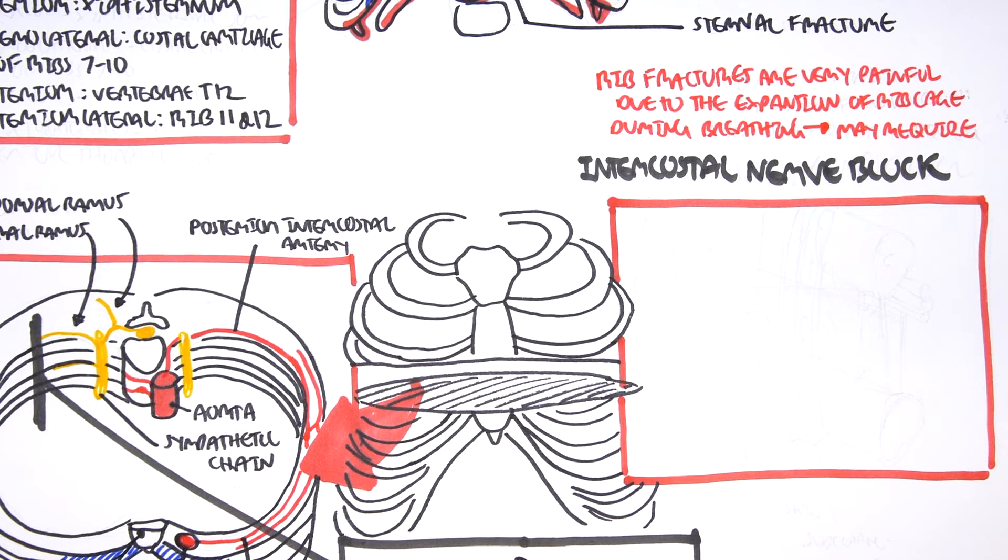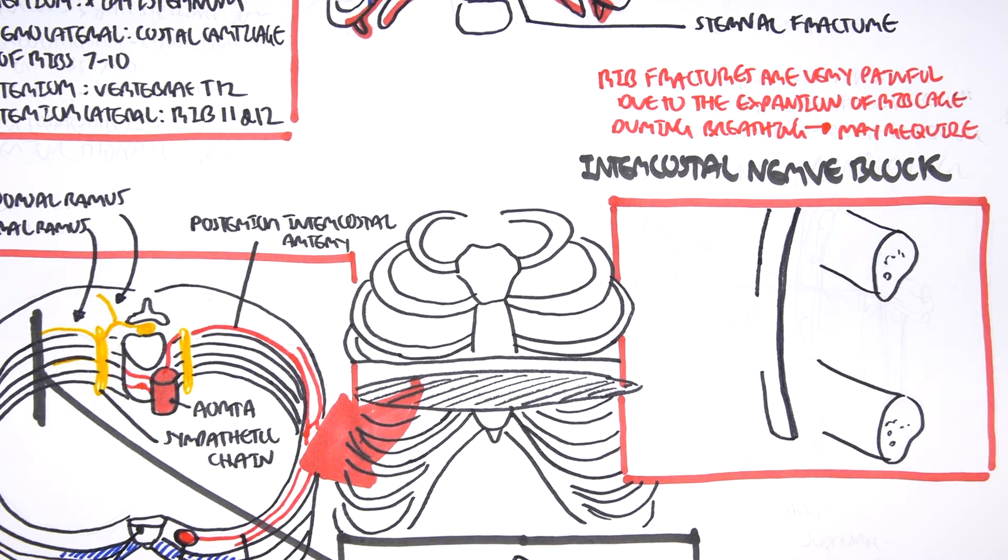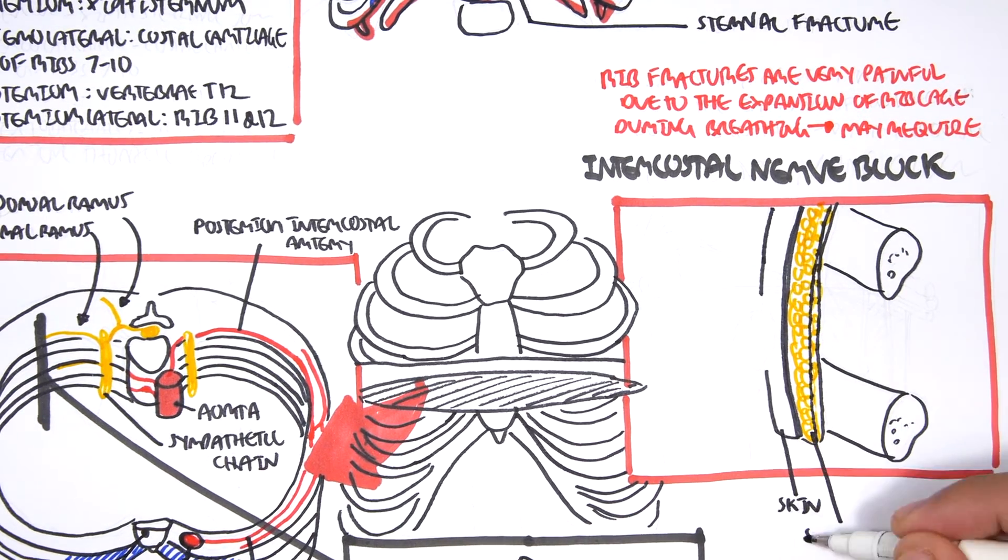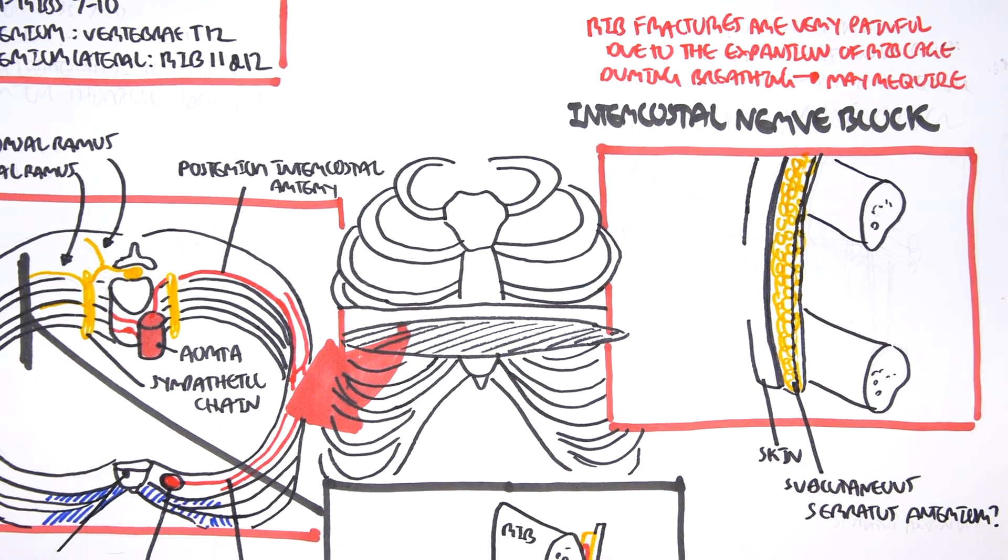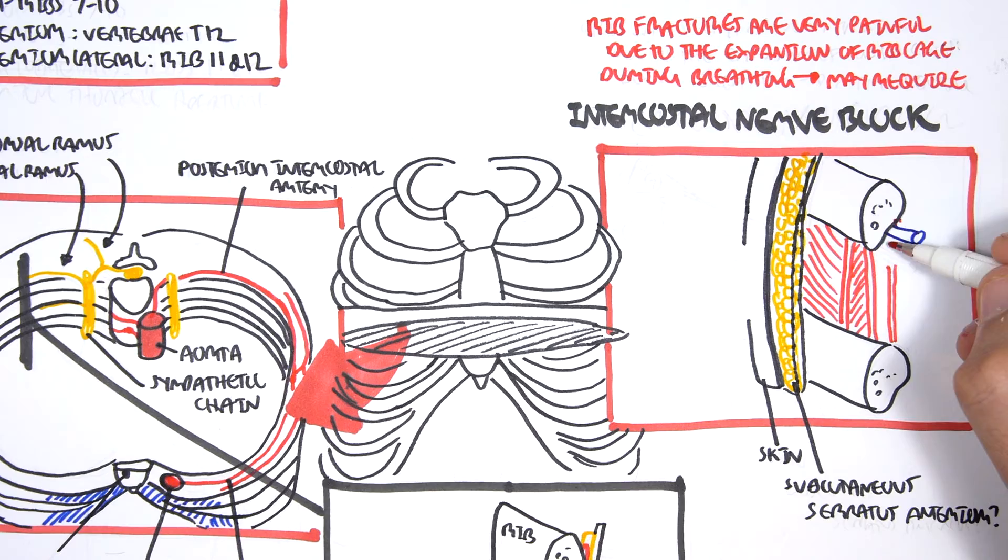So again, let's go back to that similar diagram. We have the ribs here. Now let's just go one step further and look at the most outer layer, which is the skin. Below the skin is the subcutaneous fat. And then below the subcutaneous fat, there can be another muscle layer. It can be the serratus anterior, depending on which region of the thorax is involved. And then you have the muscles of the ribs, which are your external intercostal, internal intercostal and innermost.